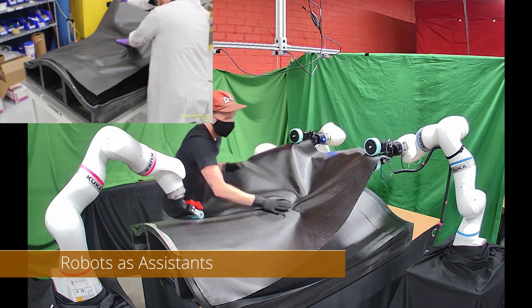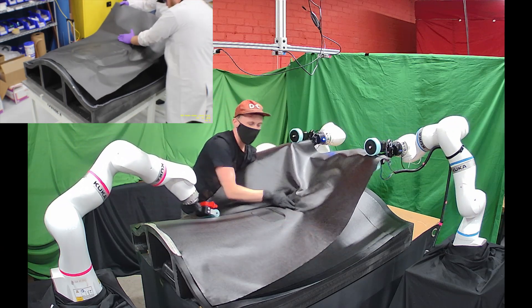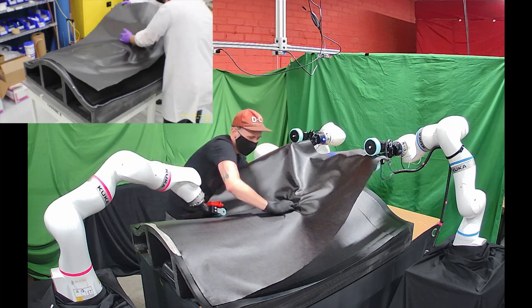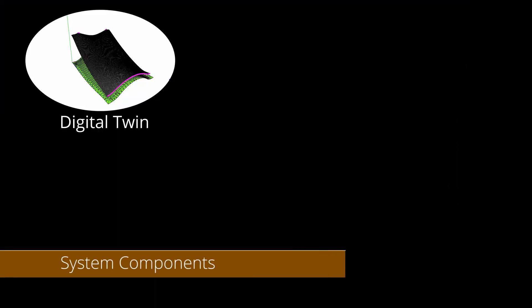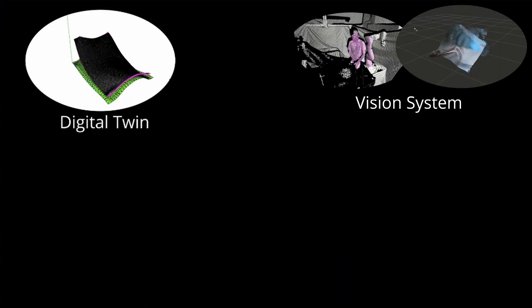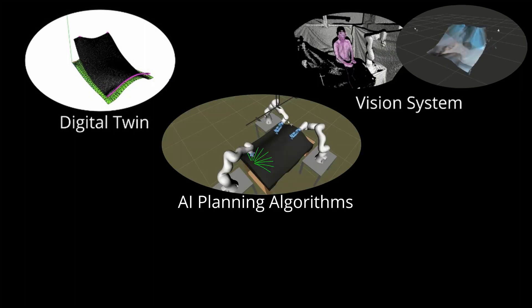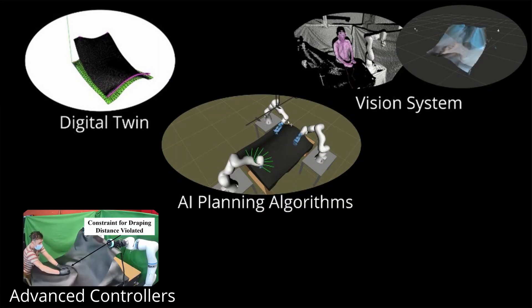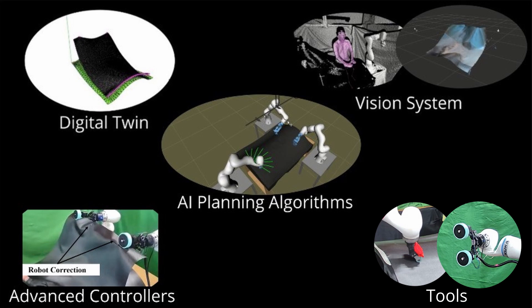we have developed a hybrid cell to demonstrate the use of robots as assistance in the composite manufacturing process. Our collaborative cell consists of a digital twin, machine vision systems, AI planning algorithms, advanced controllers, and a variety of custom tools.